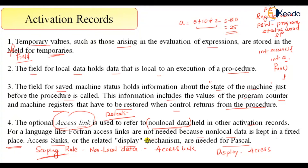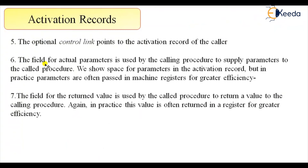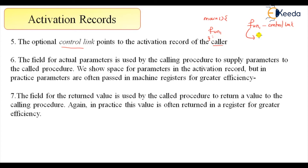The optional control link points to the activation record of the caller. If main calls fun, then the control link in fun's activation record will point to the activation record of the caller function — in this case, main.